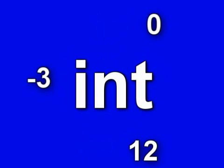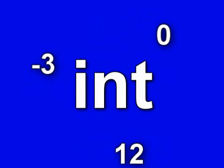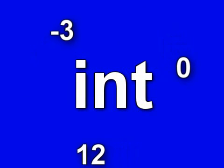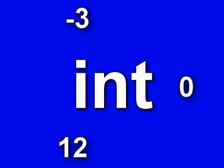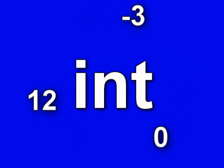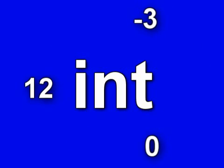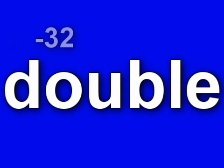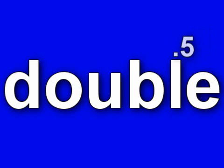We saw int-type variables before, and we know that they can take on integer values like negative 3, 0, or 12. Likewise, we saw double-type variables, which can take on integer or non-integer values like negative 32, 0.5, or 3.14.